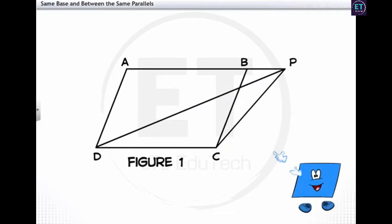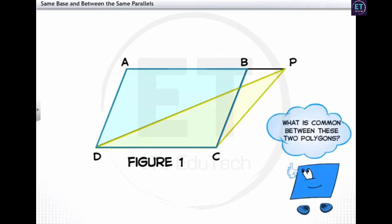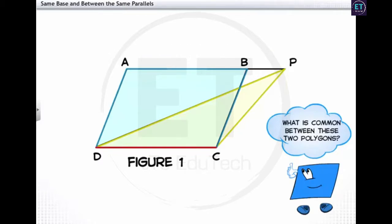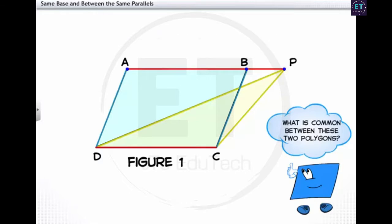In the first figure we have a parallelogram ABCD and a triangle PDC. What is common between these two polygons? First, both the parallelogram and the triangle lie on the same base DC. Second, the vertices A, B, and P that are opposite to the base DC lie on the line AP. Line AP is parallel to the base DC. These two lines are called parallels.